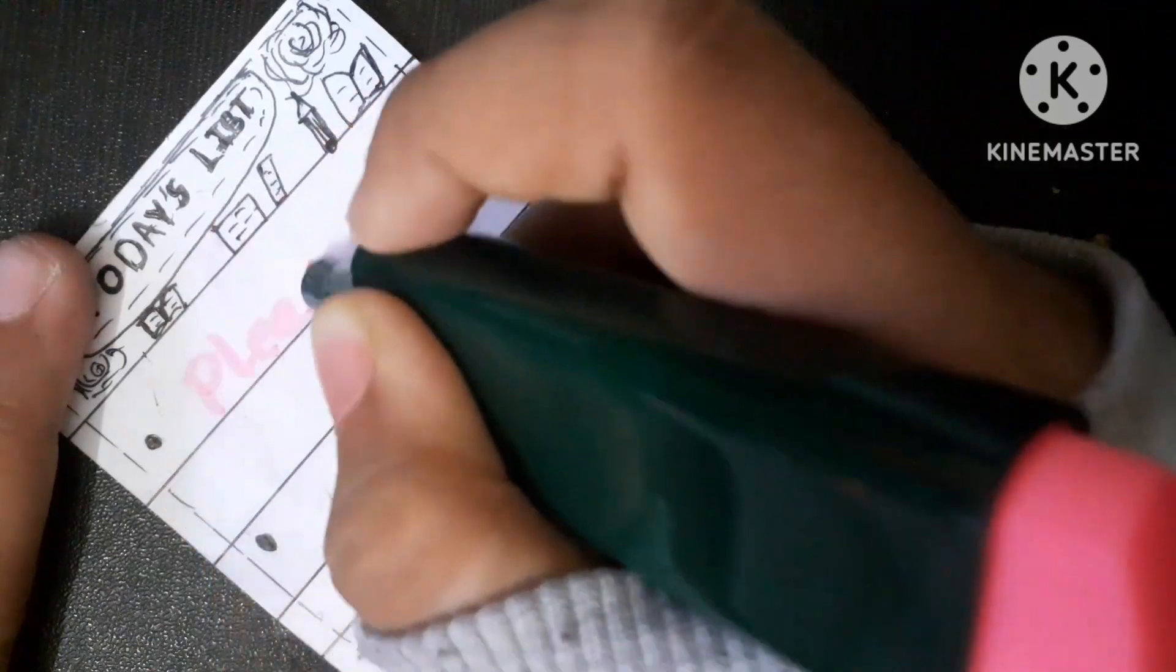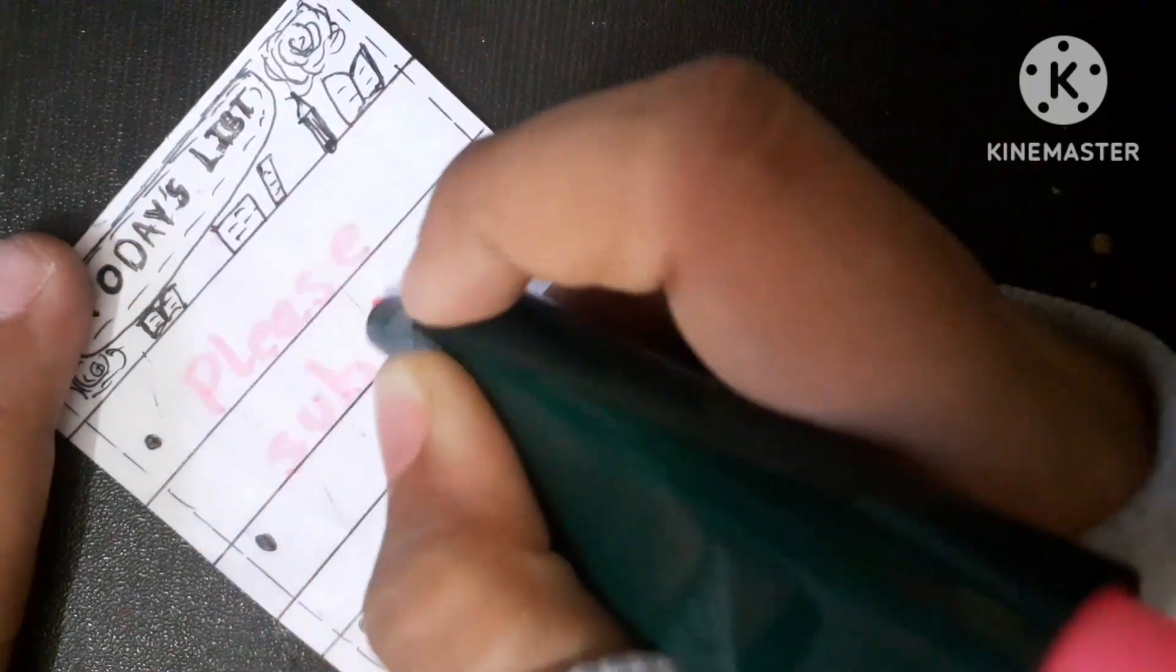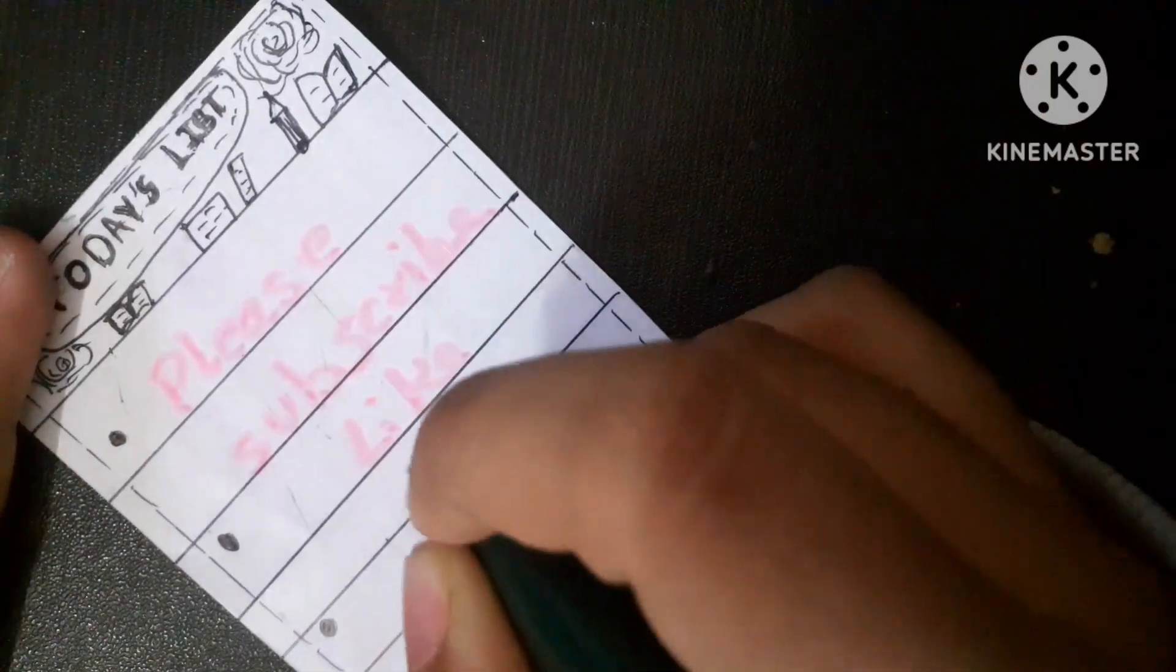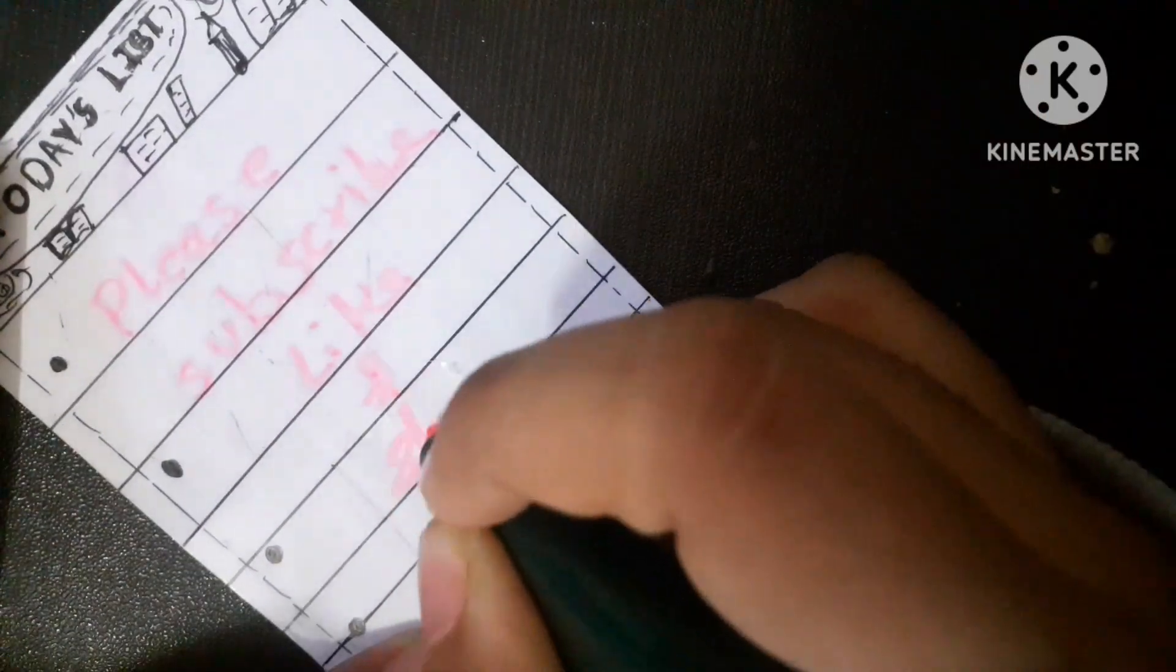So friends, here it's done. You can see how nice and amazing it is. You can use any color paper or any shapes as I told you. Now let's try it. I am using this highlighter to write. Please subscribe my channel and like, share and comment how you like it.